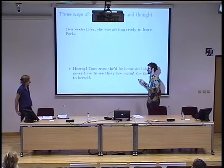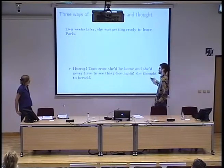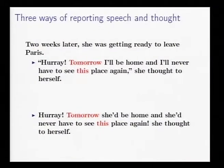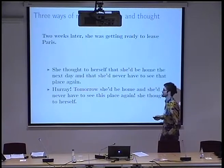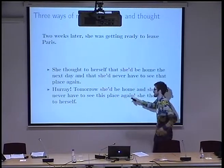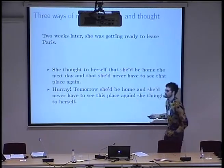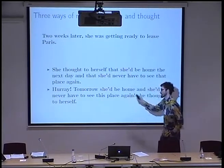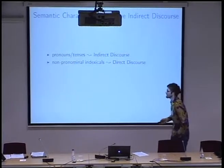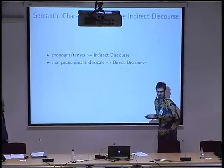The free indirect discourse version: 'Hooray! Tomorrow she'd be home and she'd never have to see this place again,' she thought to herself. It looks like it has a little bit of both. It looks like direct discourse in the behavior of non-pronominal indexicals—real indexicals like 'tomorrow' or 'this' are retained as copies of what she was literally thinking. But it also has elements of indirect discourse: pronouns and tenses are typically adjusted to the reporting environment. So instead of 'I', you have 'she', as in indirect discourse.